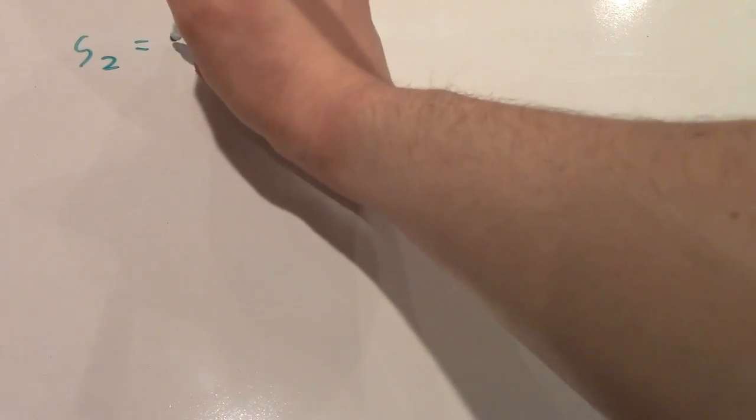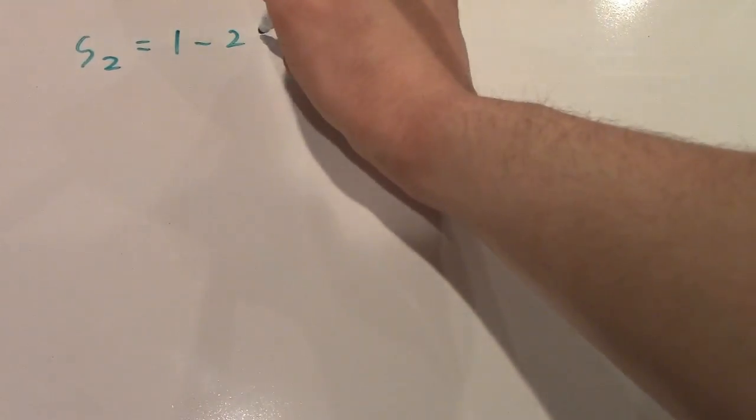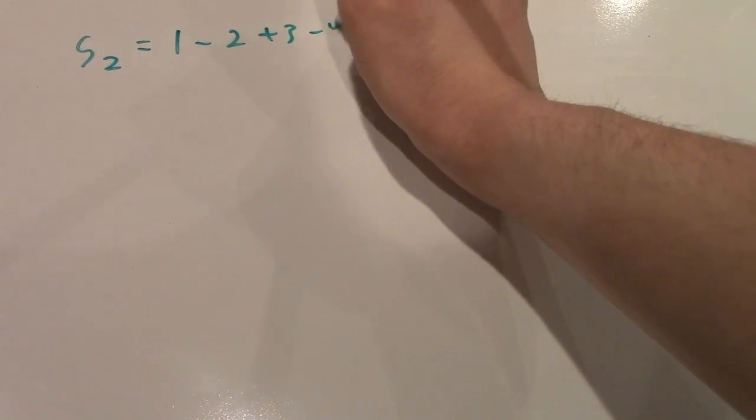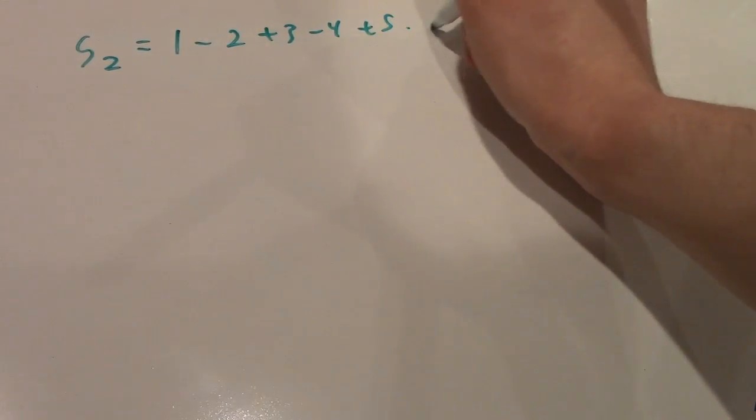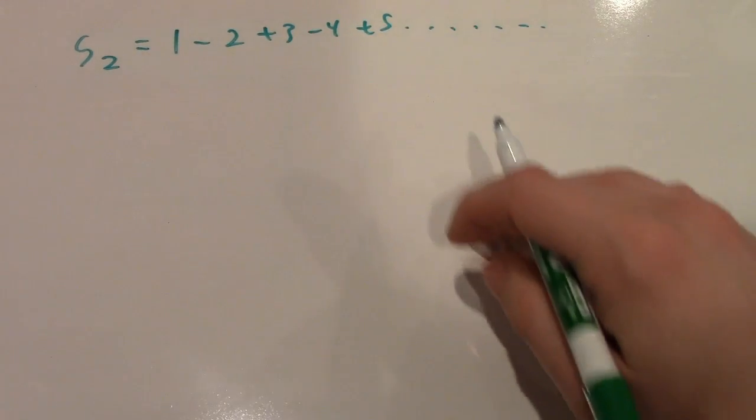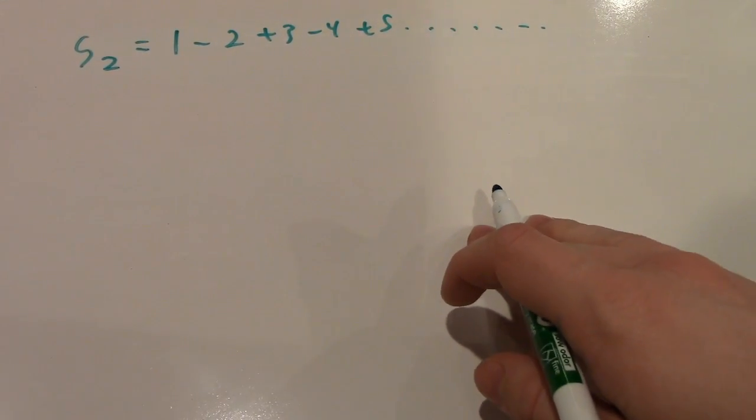Now that we know that our first sum is equal to 1 half, we can move on to our second sum, S2. Now, this is 1 minus 2 plus 3 minus 4 plus 5, and so on, alternating positive, negative, and continuing on up to infinity.